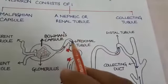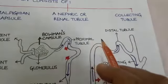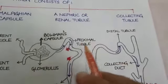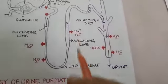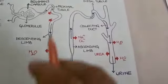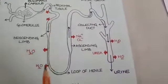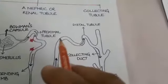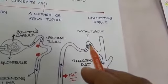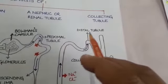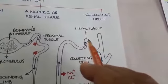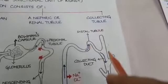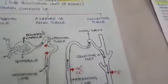The nephric tubule starts from the PCT, that is the proximal convoluting tubule, extends through the loop of Henle which has two limbs — the descending limb and the ascending limb — and ends in the DCT, that is the distal convoluting tubule, and then joins the third part of the nephron, which is the collecting tubule.